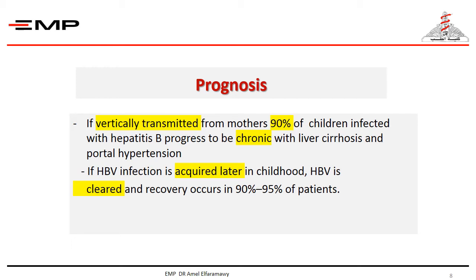If hepatitis B viral infection is acquired later in childhood, it is usually cleared and recovery occurs in 90 to 95% of patients. This indicates the paramount importance of prevention of vertically transmitted hepatitis B.